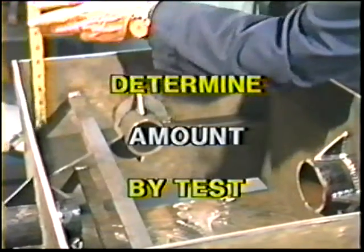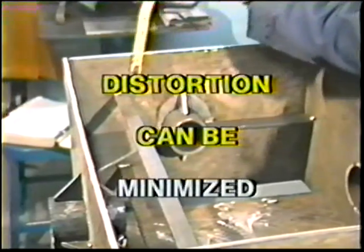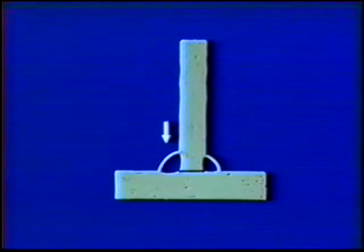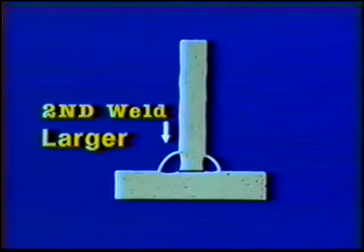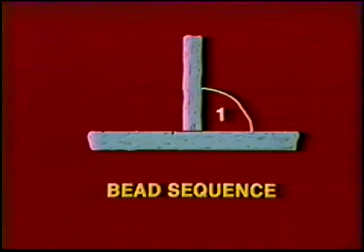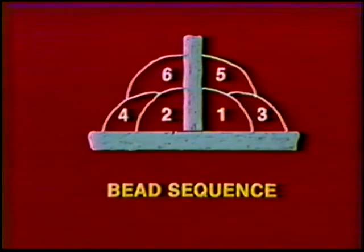A combination of things can be done to minimize the effect of distortion forces. For the inside fillet corner joint, which distorts by decreasing the angle between the plates: one solution is to estimate the amount of movement and angle the plate in the opposite direction so that the weld will pull it into alignment. Another solution is to use a T-type joint if the design permits — the second weld tends to reverse the distortion caused by the first weld and should be larger than the first, because it must pull against forces from the first weld. For additional passes, continue to alternate sides of the joint for each new bead to keep the distortion forces equal.